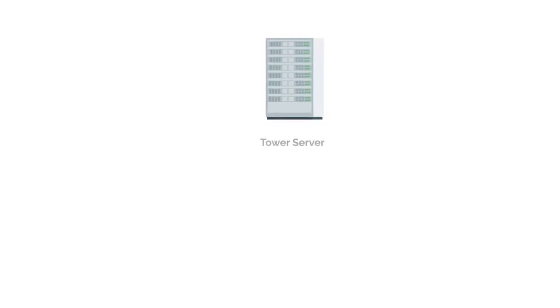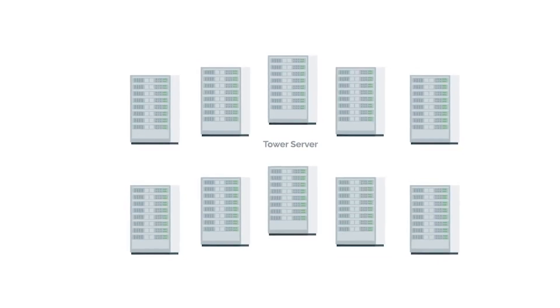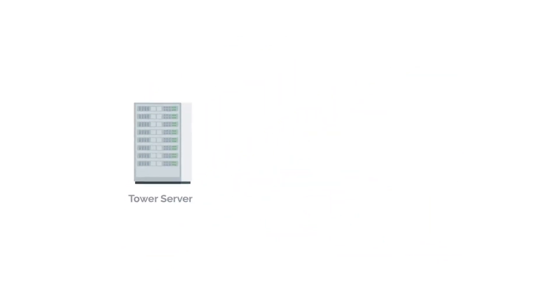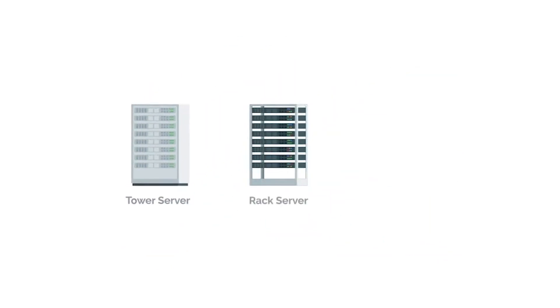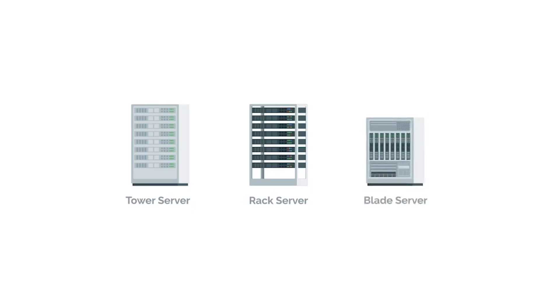Server hardware can come in lots of different forms. They can be towers that sit upright, looking very similar to desktops. Those towers can be put in a closet or sit on a table. But if you needed to have 10 servers, the towers would start taking up way too much space. Instead, you can use rack servers, which lay flat and are usually mounted in a 90-inch wide server rack. If you needed even more space, you could use blade servers, which are even slimmer than racks. These are the most common form factors for servers.